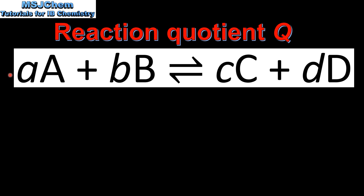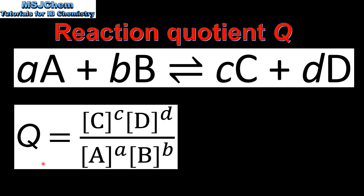Here we have a reaction where reactants A and B react together in a reversible reaction to form products C and D. Here we have the expression for the reaction quotient Q for the above reaction. In the numerator we have the concentration of the products C and D raised to the powers of their coefficients. In the denominator we have the concentrations of reactants A and B also raised to the power of their coefficients.